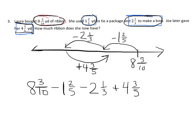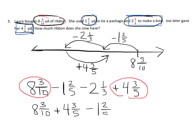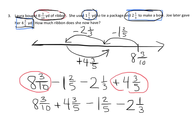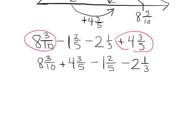So I think what I would do is let's use the commutative property because I want to put this guy next to this guy. So I'm going to write 8 and 3 tenths plus 4 and 3 fifths and let's do minus 1 and 2 fifths and then minus 2 and 1 third. So I'm going to scroll up a little bit. So there's our expression and now let's solve it.